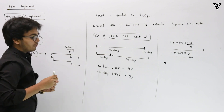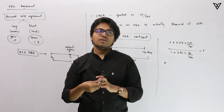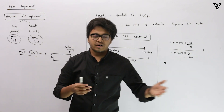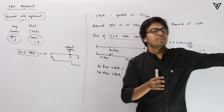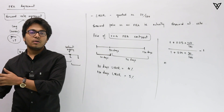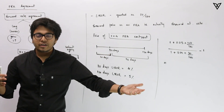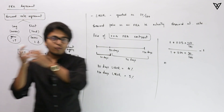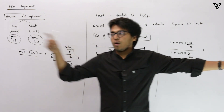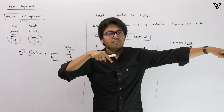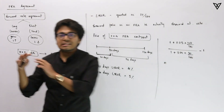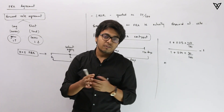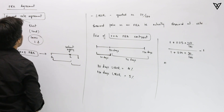A Forward Rate Agreement is a pretty simple thing. Say for example I am starting a factory and I would be needing a loan six months down the line for a period of 12 months. I do not need a loan right now, but after six months I'll be needing a loan for 12 months. What I'm worried about at this point in time is: what if after six months the interest rate increases? An FRA contract allows you to enter into such an agreement whereby you can lock the interest rate at time period zero for after six months for a period of 12 months. The person who is borrowing the money is known as the long FRA person, and the person who is lending the money is known as the short FRA person.